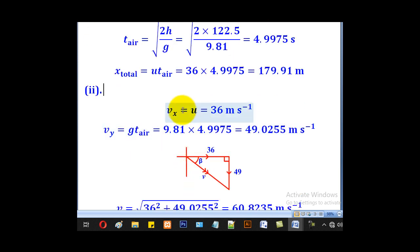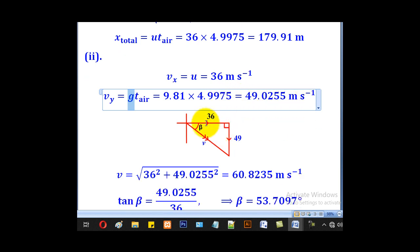For part (ii), they wanted the velocity, so we have to first get the horizontal component, which is equal to u, 36, and the vertical component, which is gt, so 9.81 times 4.9975. We will come up with 49.0255 meters per second. When you draw a diagram, remember the motion is entirely horizontal, we took positive to be downward motion. So in this case, 36 and 49 are there.